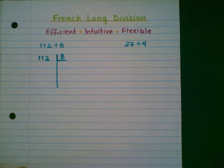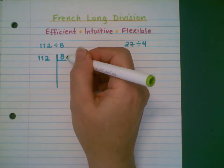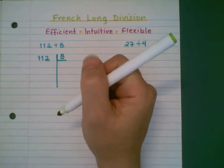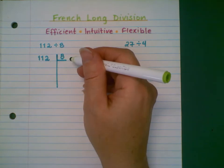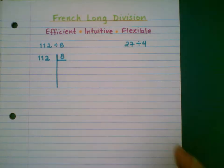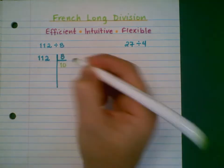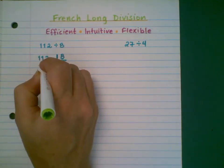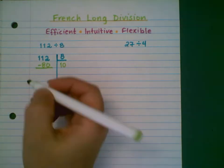I extend this line down the center to help keep things organized. I'm going to be using multiples of 8 and taking away multiples of 8 from this 112. When first learning, it's a good idea to use values that are easy to subtract — multiples you know offhand, like times 2, times 5, times 10. So I need a number less than 100 that is a multiple of 8. 10 times 8 is 80. I'm going to subtract 80 from 112, and the result is 32.